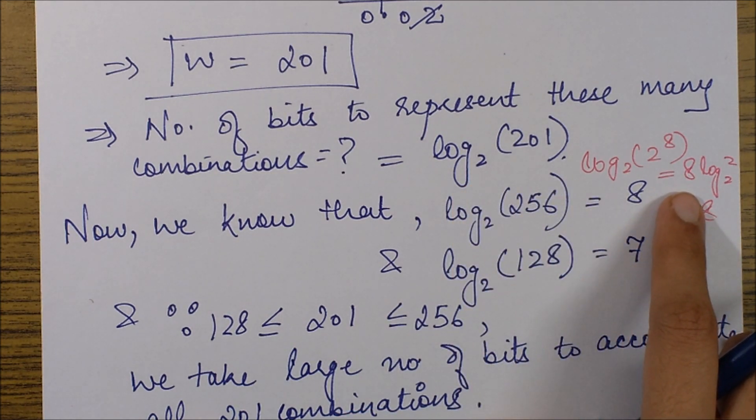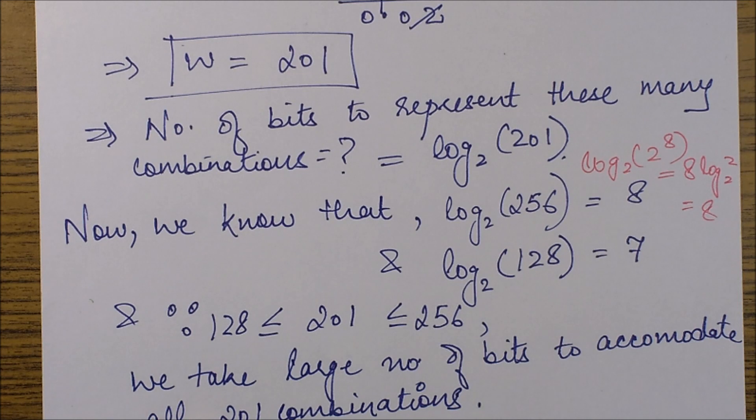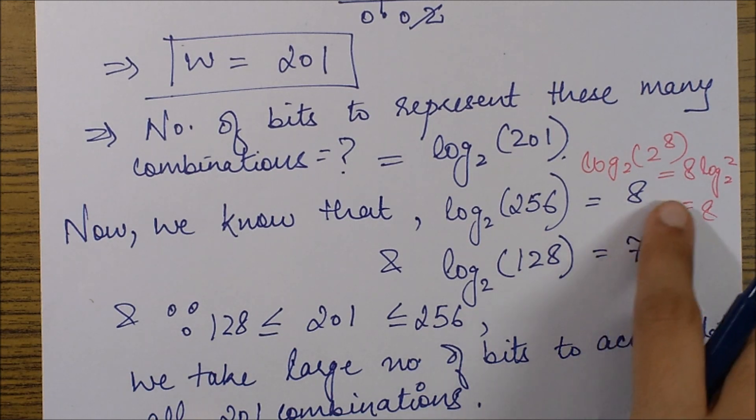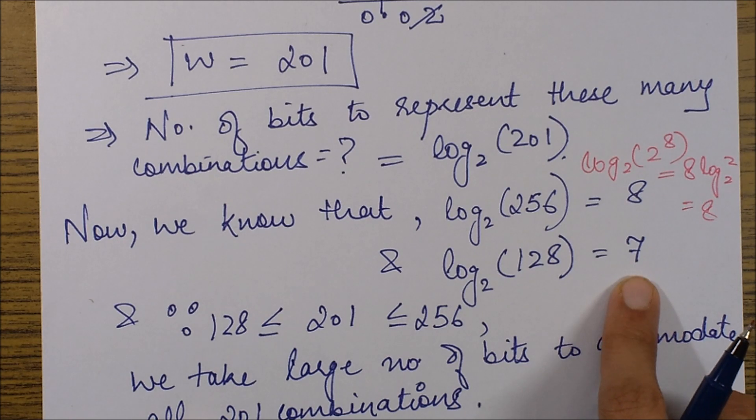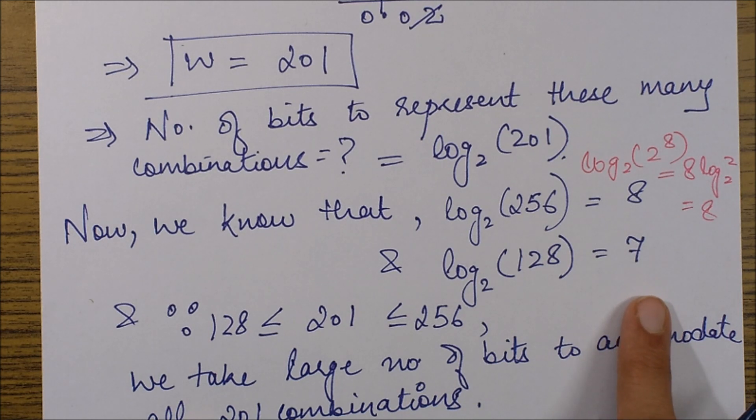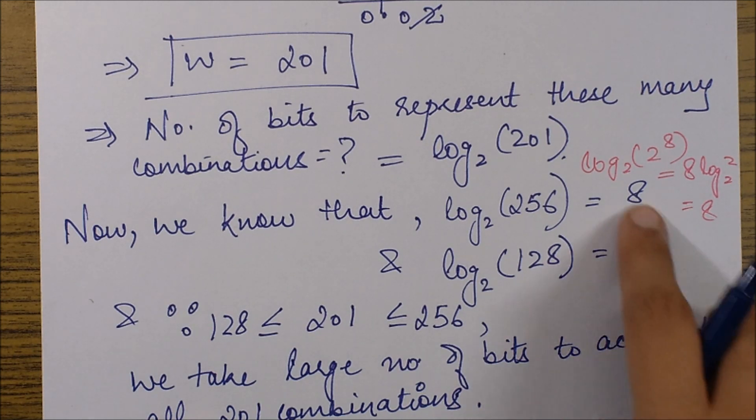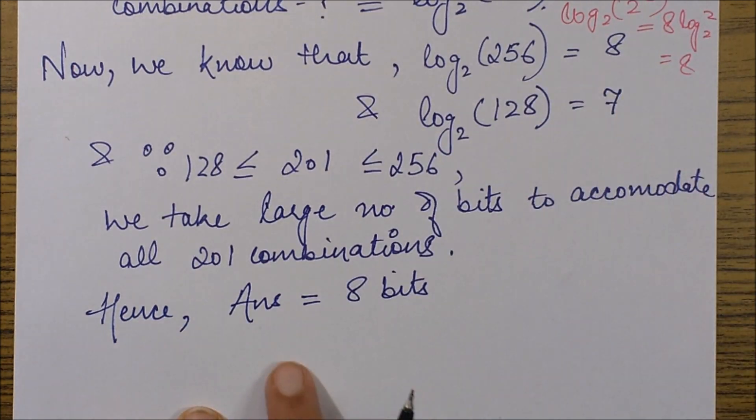Since I have to take an integral number of bits—number of bits will always be integral, I cannot say I'm taking 7.5 bits—so either I can choose 7 or 8. But if I choose 7, I'll be losing some information, so I have to take the entire information. I'll be choosing some extra bits, so I'll be taking my answer as 8. The answer in this case will be 8 bits.